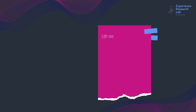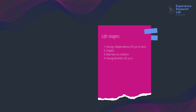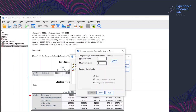If I were to design the survey, I would try my best to get quality data by redefining the values as: one for the young independents (with age group in brackets), two for the singles, three for the married with no children, four for the young families (with age group in brackets), five for the old families (with age group in brackets), and six for the old independents (with age group in brackets). Anyway, since this is the only data I have, I will go with the existing values.